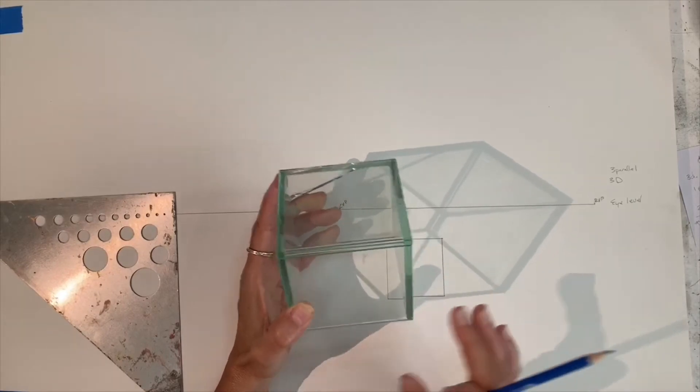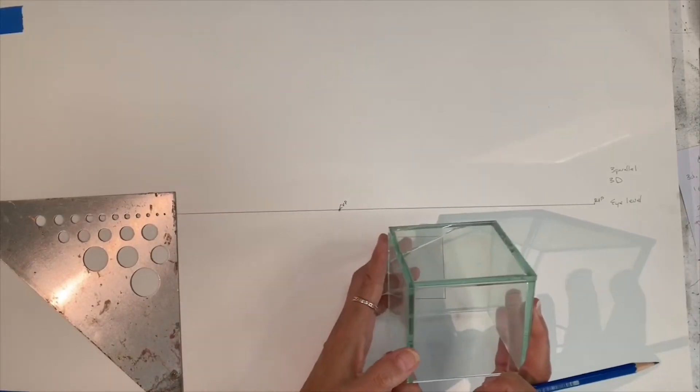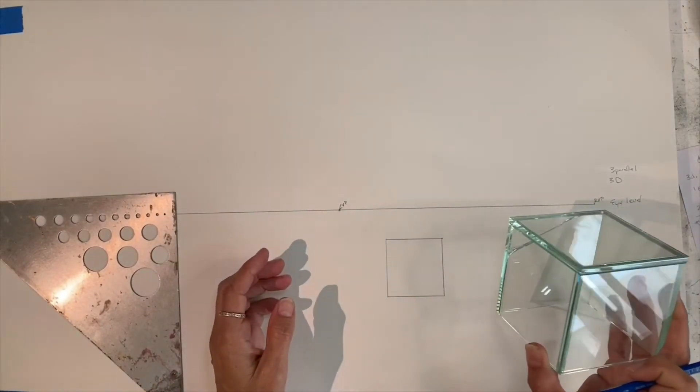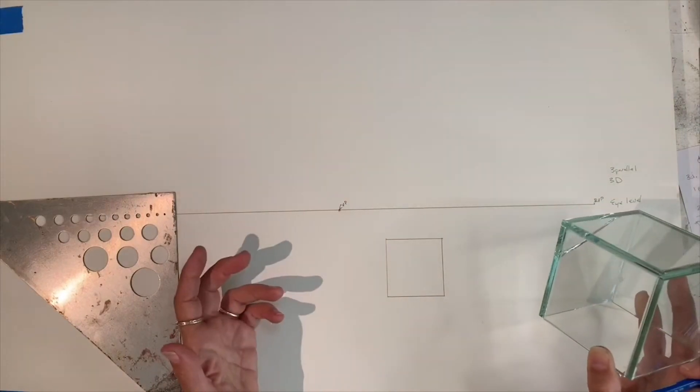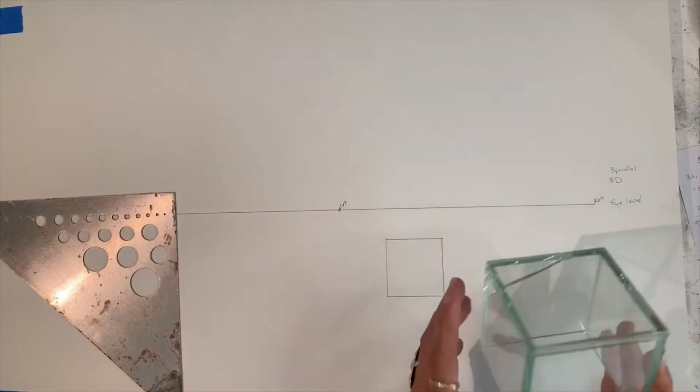We always see the full front. If it starts moving off to the side, it turns into two point perspective. And that's what we'll be talking about next.